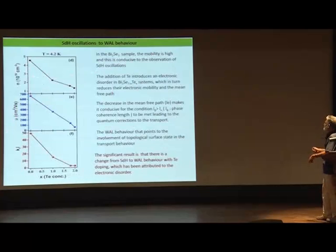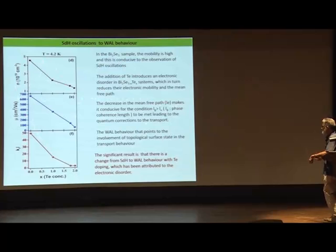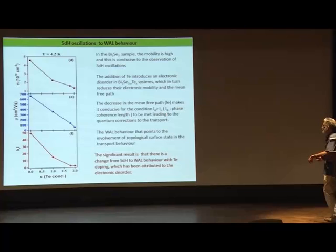In the Bi₂Se₃ sample the mobility is high, which is conducive to observation of SDH oscillations. Addition of tellurium introduces electronic disorder, which reduces electronic mobility and mean free path. The decrease in mean free path makes conditions favorable for quantum corrections to transport, specifically the condition L_φ less than L greater than L_e.